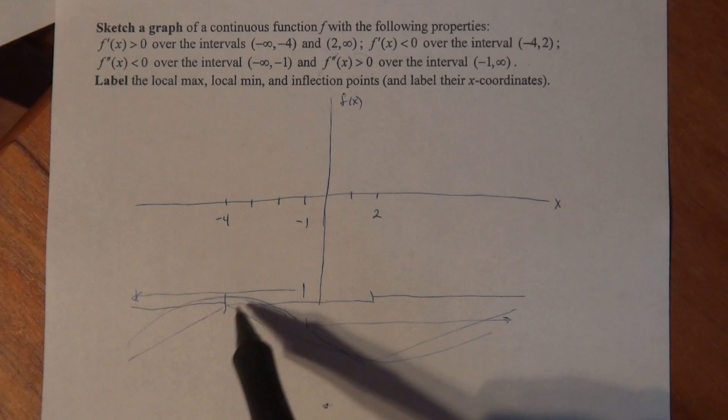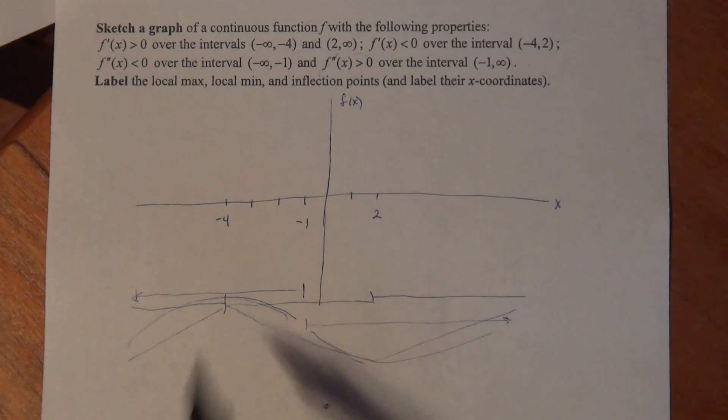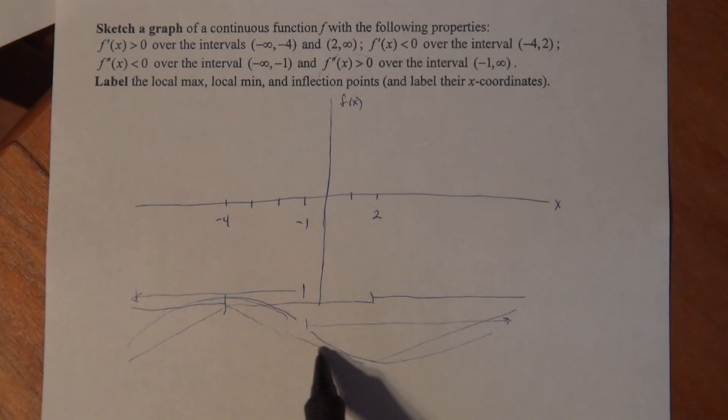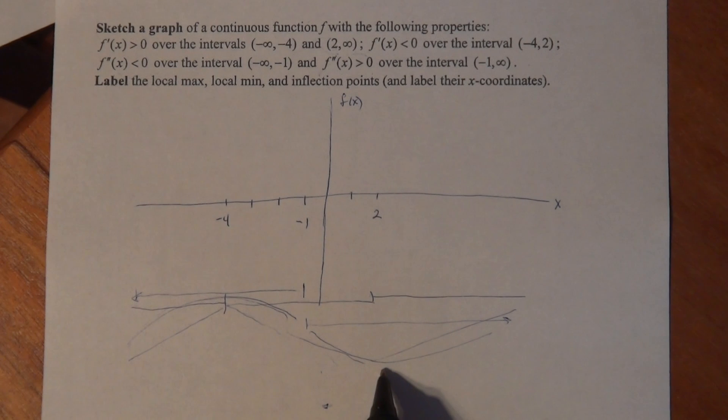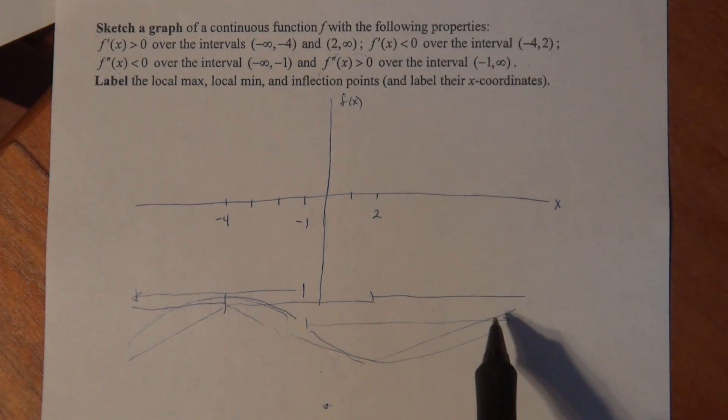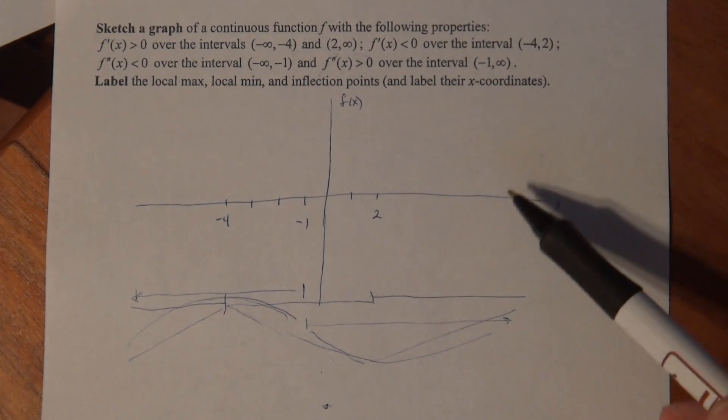So along this interval, I'm increasing and concave down. Along this interval, I'm decreasing and concave down. Then I continue to decrease, but I'm concave up until here. Then I increase and I'm concave up. Now I want to translate this into a nice pretty graph up here.